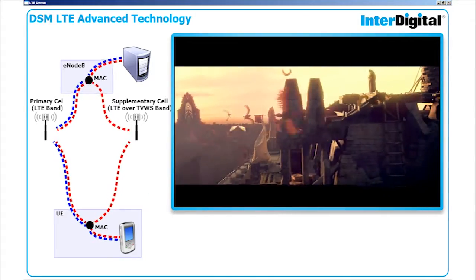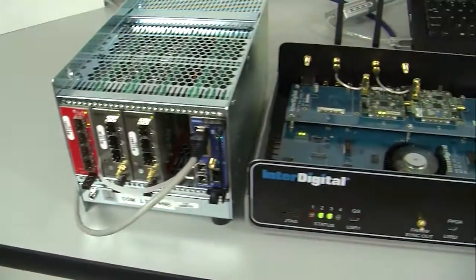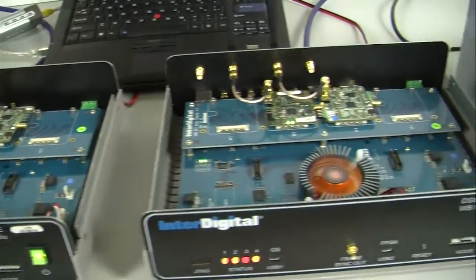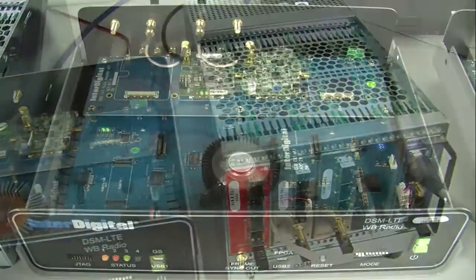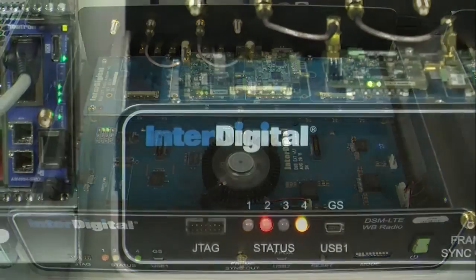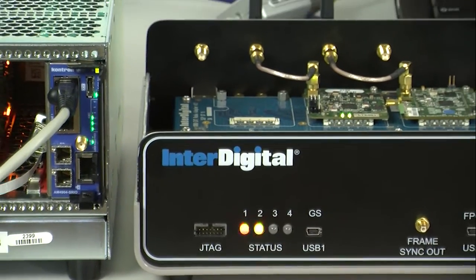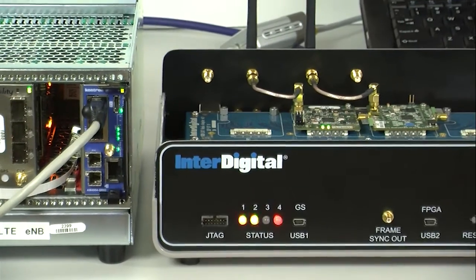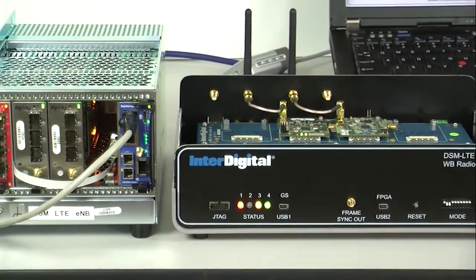Cellular operators facing the bandwidth crunch and currently constrained by their own licensed spectrum can offload to white space and other underutilized bands. This opens the door to hundreds of megahertz of spectrum and can carry existing cellular waveforms like LTE.